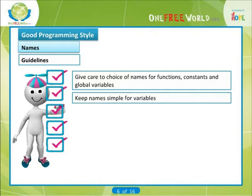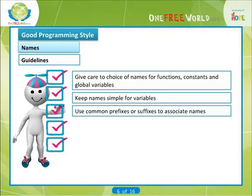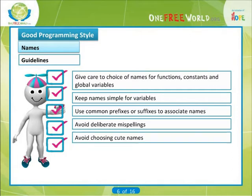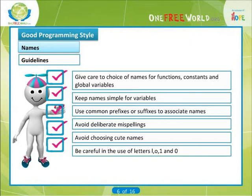Keep names simple for variables used only briefly and locally. A single letter is often a good choice for the variable controlling a while or for loop, but would be a poor choice for functions. Use common prefixes or suffixes to associate names of the same general category — for example, input file, total file, master file. Avoid deliberate misspellings, for example 'idex' instead of 'index', or 'comp' instead of 'count'. Avoid choosing cute names whose meaning has little or nothing to do with the problem. Be careful in the use of letters L, O, 1, and 0.